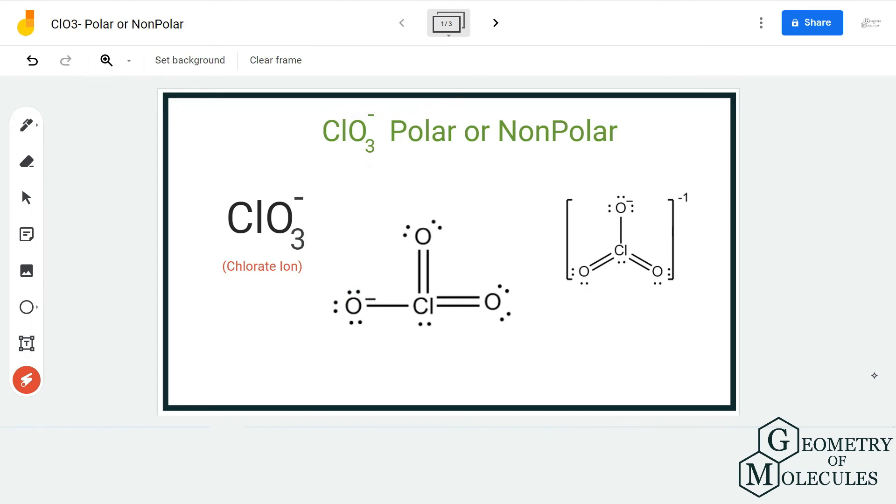That is because it is not completely symmetrical - there is a little bit of asymmetry. These two are forming double bonds and this one is forming a single bond. Because of this asymmetry and because of this negative charge, this ion is a polar one.